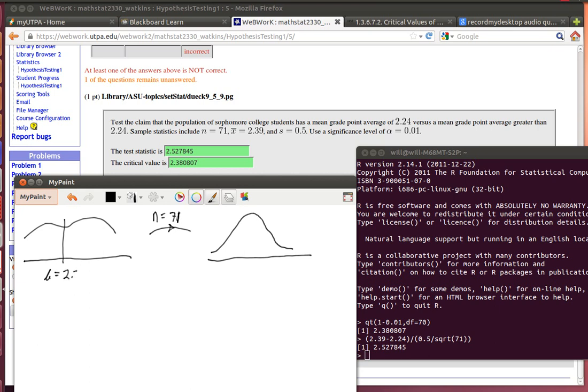The null hypothesis always includes some claim about something being equal. So the null hypothesis is that the mean is 2.24. That's how you decide what the null hypothesis is - it always includes an equal. But as soon as you have one hypothesis, there is an alternative hypothesis.